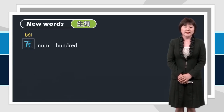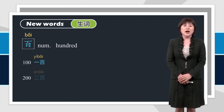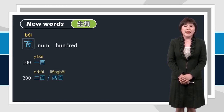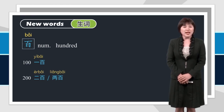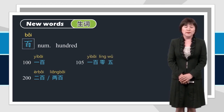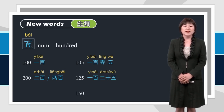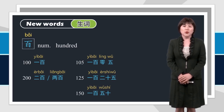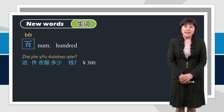百。跟我读：百。一百，二百，两百。两百 is more often used than 二百. 一百零五，一百二十五，一百五十。你有多少钱？